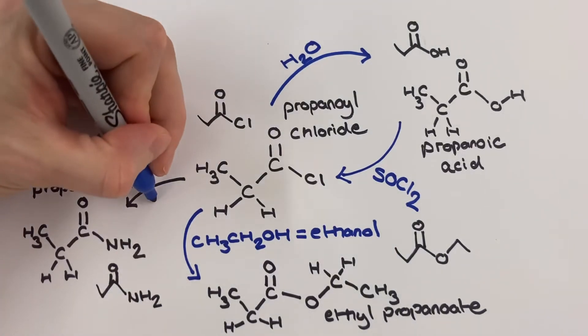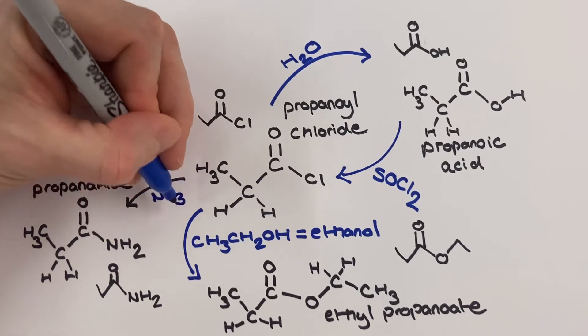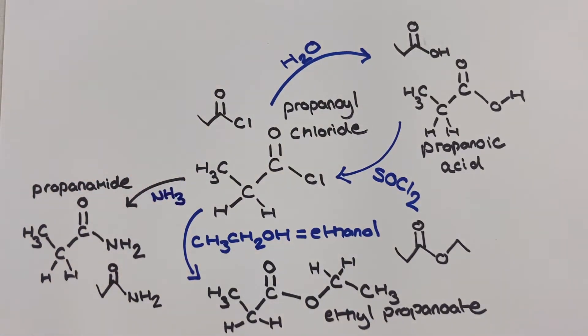To produce the amide from the propanoyl chloride we use ammonia, and the product alongside the primary amide is some ammonium chloride salt.